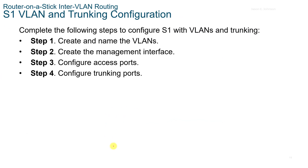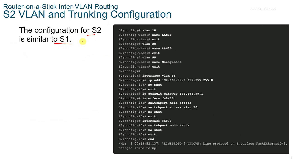There are four steps to complete: create and name the VLANs, create the management interface, configure the access ports, and configure the trunking ports. The configuration for S2 is similar to S1. The commands include: create VLAN 10 and name it, create VLAN 20 and name it, set interface VLAN 99, add the IP address, no shutdown, set the default IP gateway, set the switch port mode to access, no shutdown, set the interface switch port mode for trunking, no shutdown, exit and end.